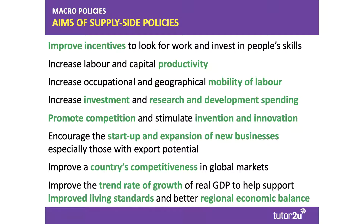Crucially, as we saw in a previous video, supply-side policies look to lift and improve both absolute and relative productivity — productivity of labor and capital. So output per worker, or the physical productivity of a new bit of capital machinery. Higher productivity can cause the production possibility frontier to shift outwards and ultimately can lift per capita incomes.